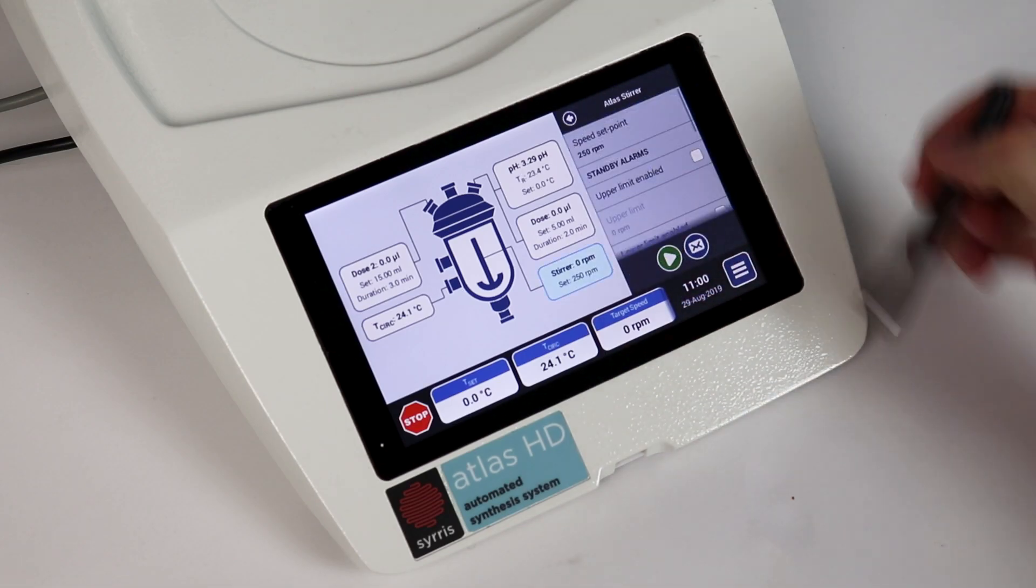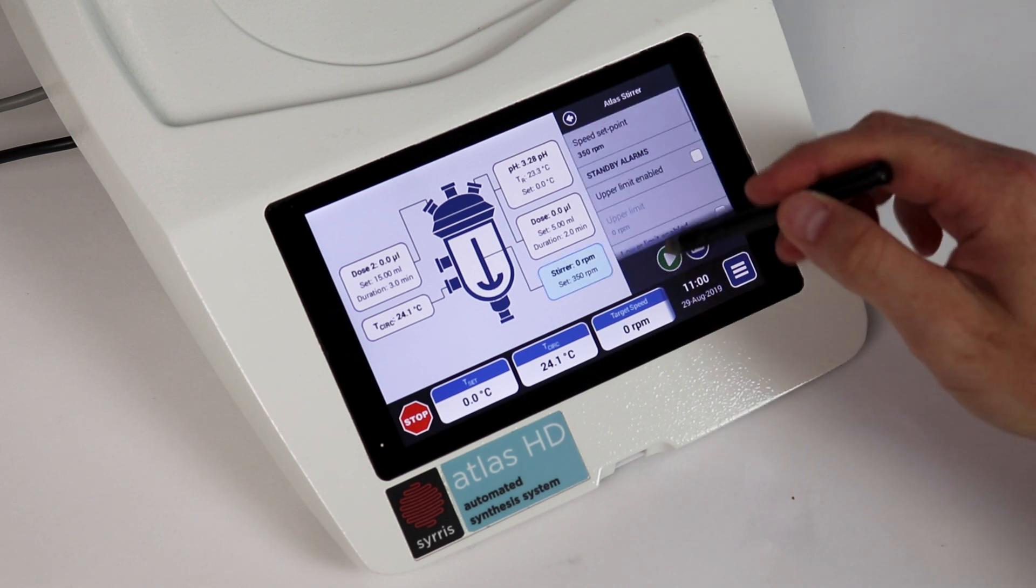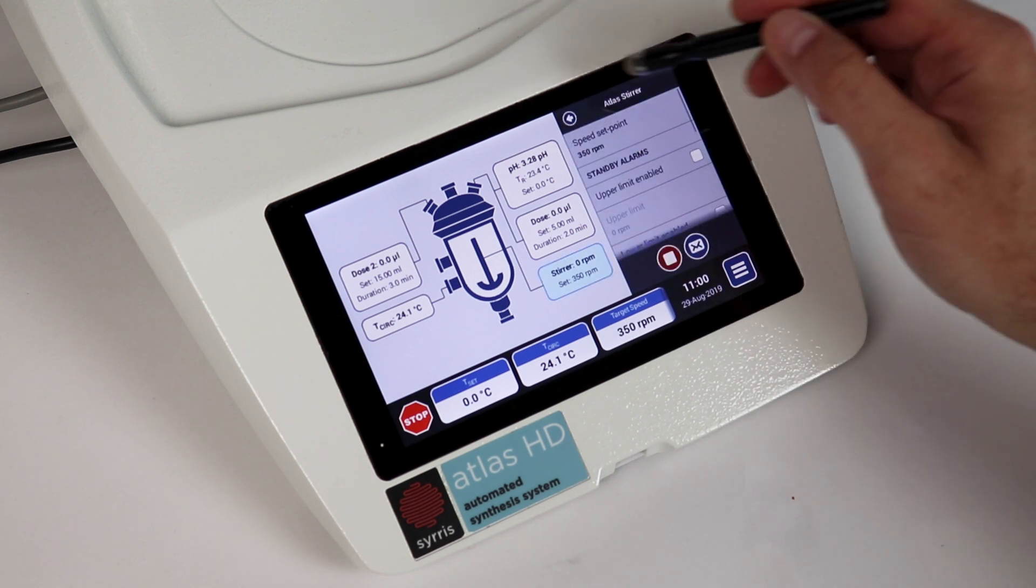Simply tapping on any piece of hardware will bring up its control menu, allowing you to manually input set points and get your chemistry up and running in a matter of seconds.